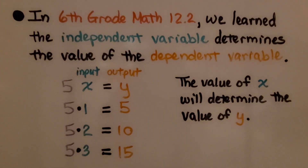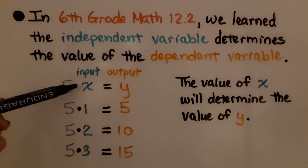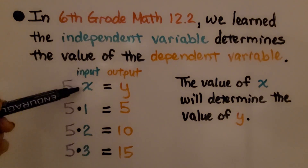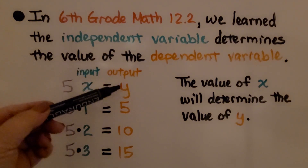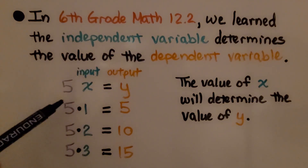In case you don't remember, in sixth grade math lesson 12.2, we learned the independent variable determines the value of the dependent variable. So if we're multiplying 5 times some number x, x is the input — that's the independent one — and y is the output, the dependent one.